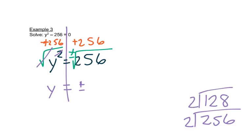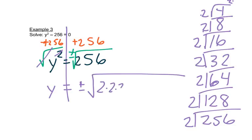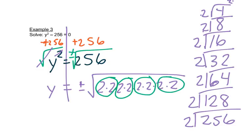Continuing: 128 ÷ 2 = 64, 64 ÷ 2 = 32, 32 ÷ 2 = 16, 16 ÷ 2 = 8, 8 ÷ 2 = 4, 4 ÷ 2 = 2 — giving us eight 2s total. Looking for groups of two 2s, we find four groups: 2 × 2 = 4, × 2 = 8, × 2 = 16. So y = positive 16 and y = negative 16.